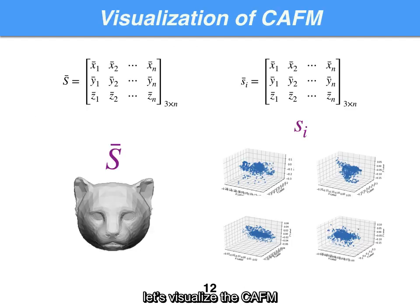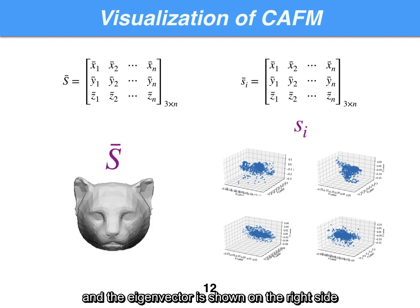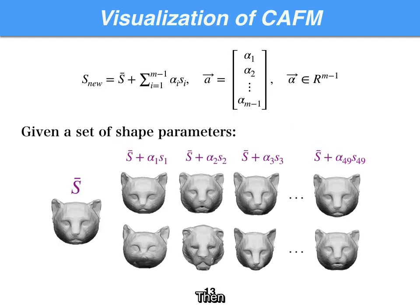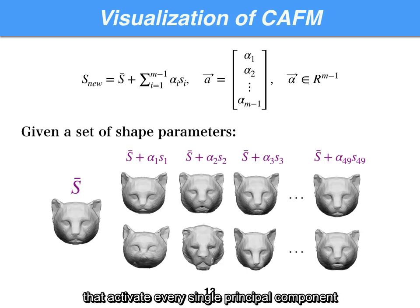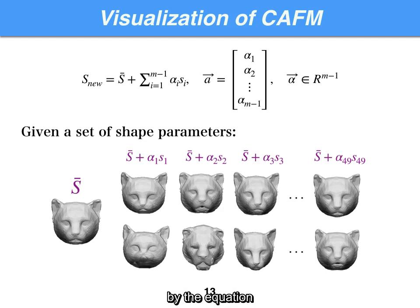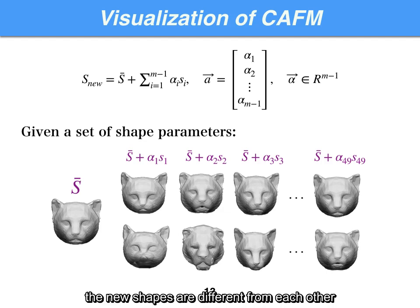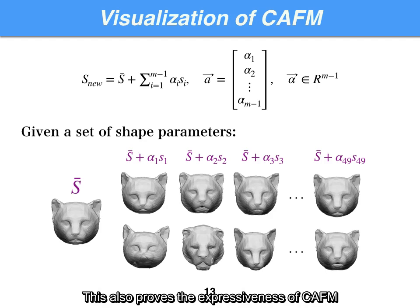Let's visualize the CAFM. The average shape of the face is shown on the left side and the eigenvectors are shown on the right side. We can give a set of shape parameters that activate every single principal component, and the new shape of face can be generated by the equation. We can observe the new shapes are different from each other and the deformation is quite reasonable, which proves the expressiveness of CAFM.